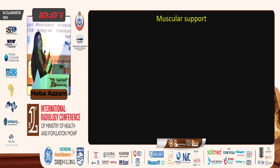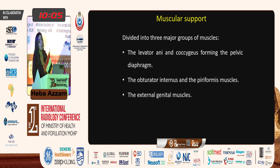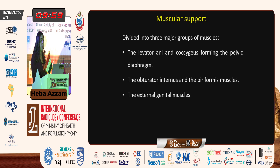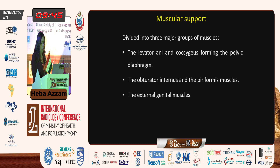The muscle support consists of three major groups: the levator ani and coccygeus muscle forming the pelvic diaphragm, the obturator internus and piriformis muscle, and the external genital muscles. However, the only muscle that has an active role in supporting the pelvic floor is the levator ani muscle — the other muscles do not have an active role.